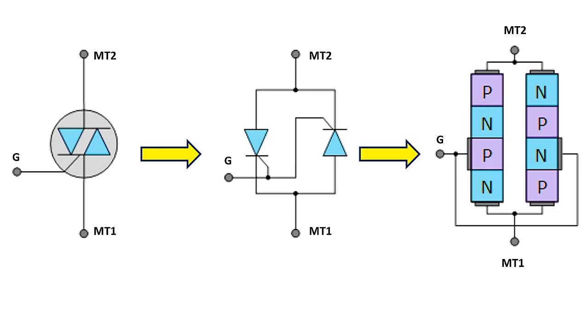Thyristor is used in DC applications as it allows current to flow in one direction. TRIAC, on the other hand, is mostly preferred in AC applications since it can flow current in two directions thanks to this structure.